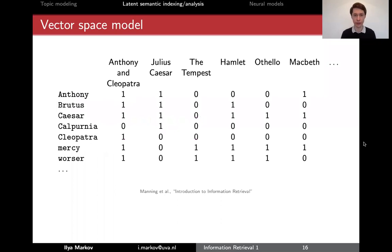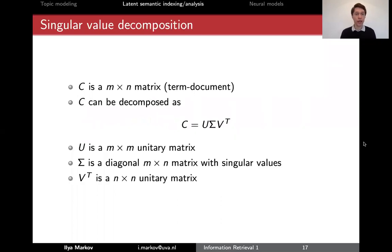We've seen this picture in the very beginning of the discussion about vector space model. Now we have this matrix C between terms and documents. And according to linear algebra, any matrix can decompose as follows as three other matrices, where U and V are unitary matrices. So they are squared and they have certain properties where transposed is the same as the inverse. And sigma in the middle is a diagonal matrix with singular values. So basically we only have values on the diagonal and they are called singular values. So that's why it's called singular value decomposition. This is just a fact from linear algebra.